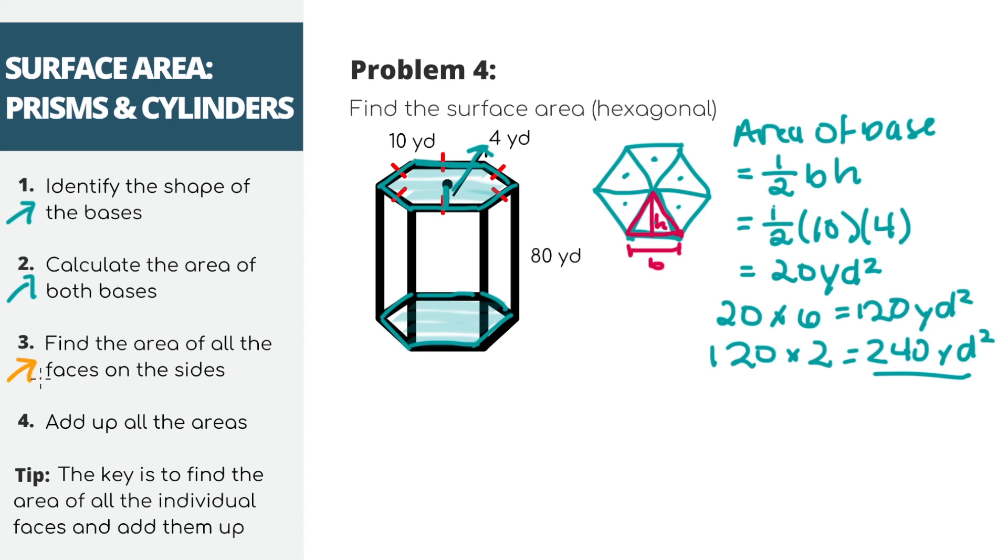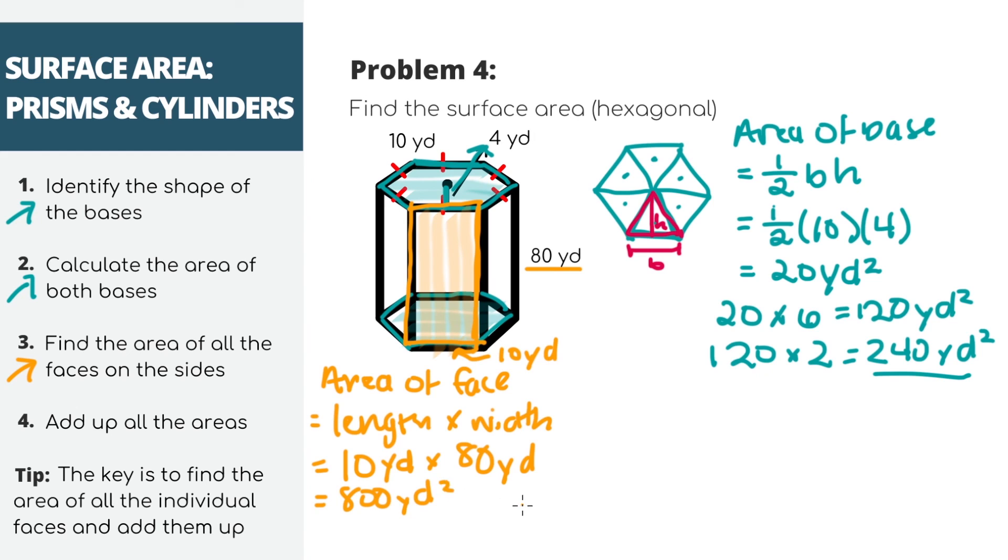Now, finding the area of the outside faces, if we just look at one face, it's a rectangle, right? So base times height, which is 10 times 80, is 800 yards squared. And there are a total of 6 faces. So 800 times 6 equals 4,800 yards squared. This is the area of all of the outside faces on the side.